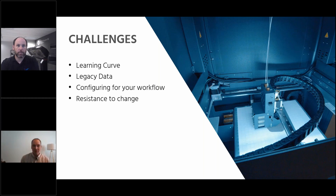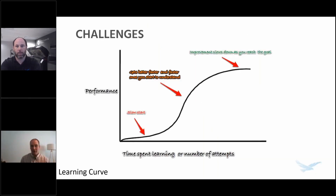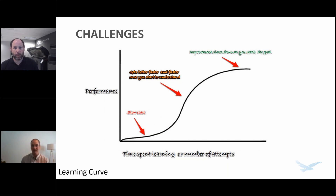There are four main challenges that can cause a CAD transition to not go as smoothly as we'd like: the learning curve, legacy data, workflow configurations, and resistance to change. The learning curve can certainly be a challenge, but if we plan for it we can minimize its impact. Many people today have existing familiarity with 3D CAD tools — if you're one of those, you don't have to start at the beginning of the learning curve. A lot of parametric 3D CAD packages use similar design philosophies, which means you might be starting at about 40% of the learning curve already.